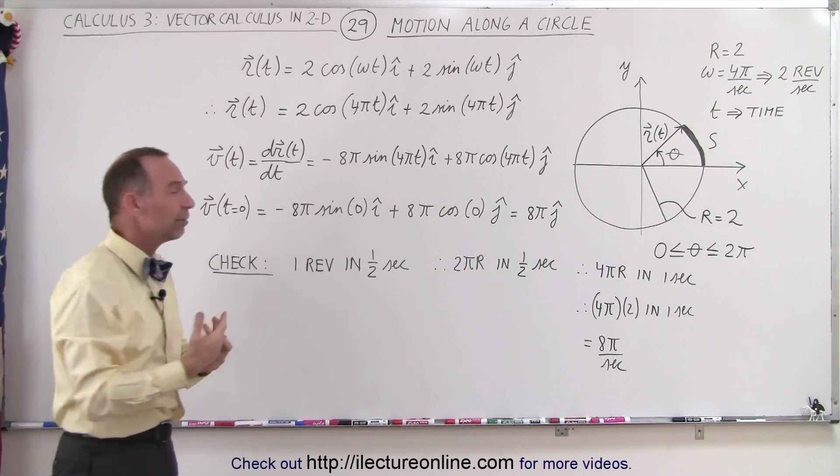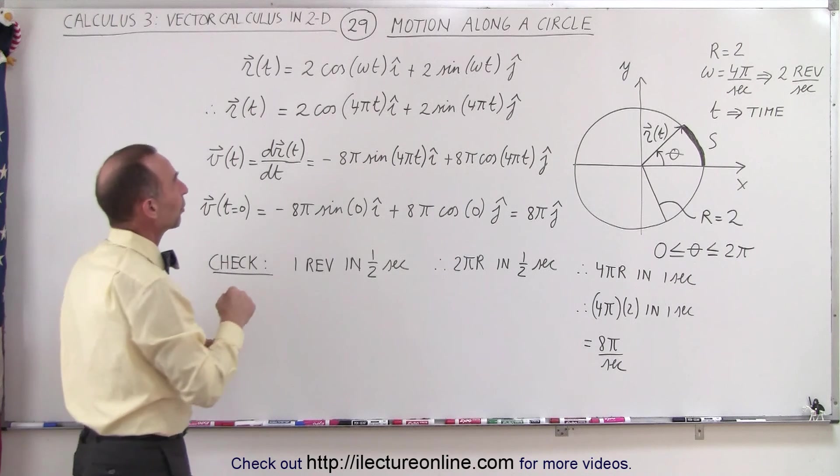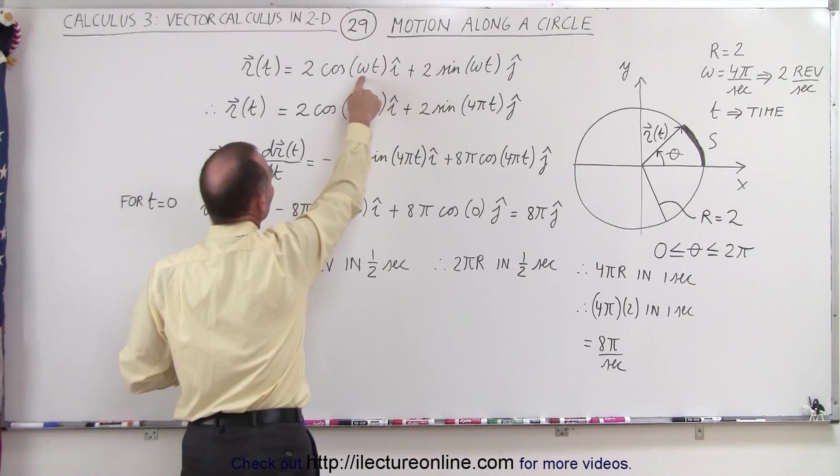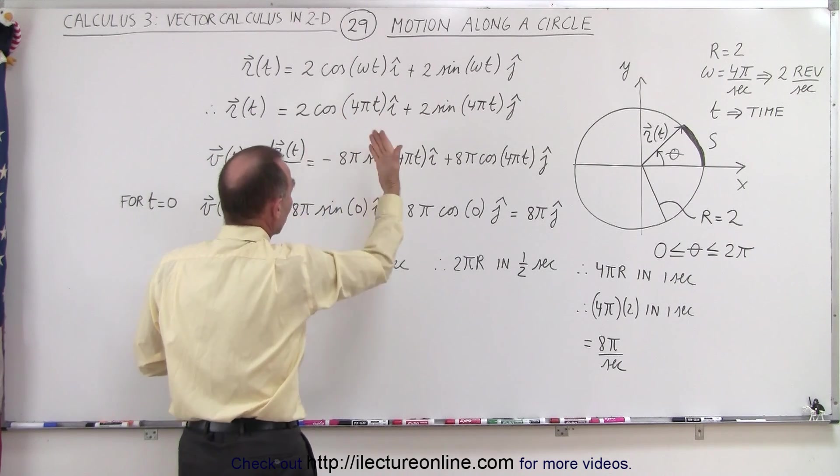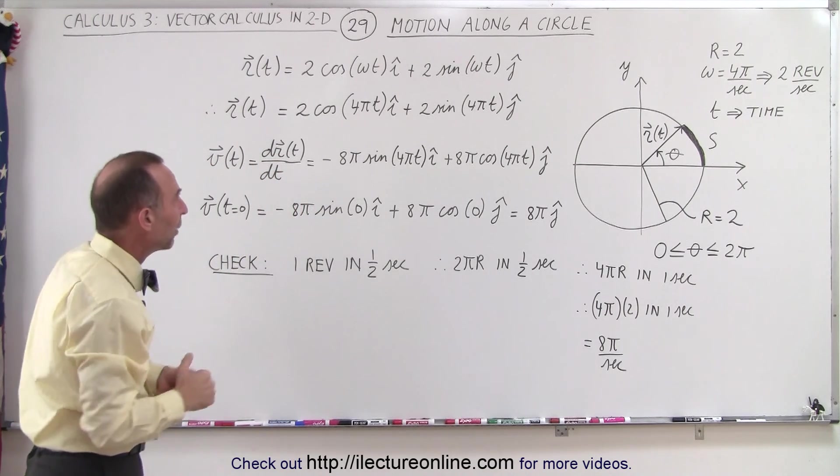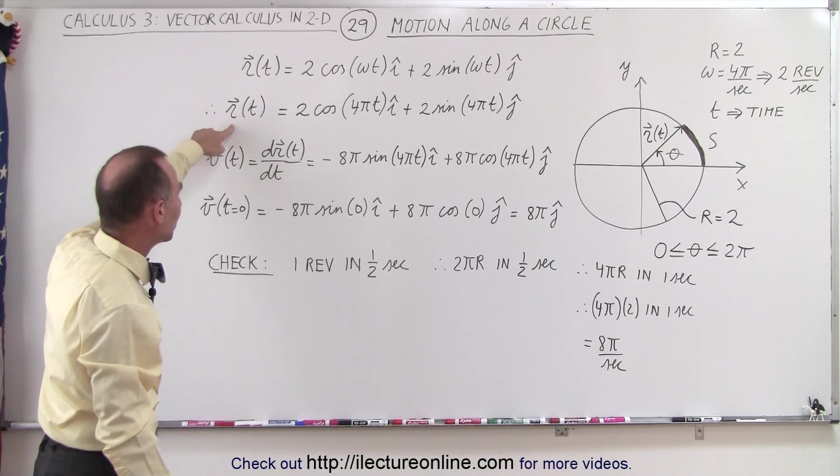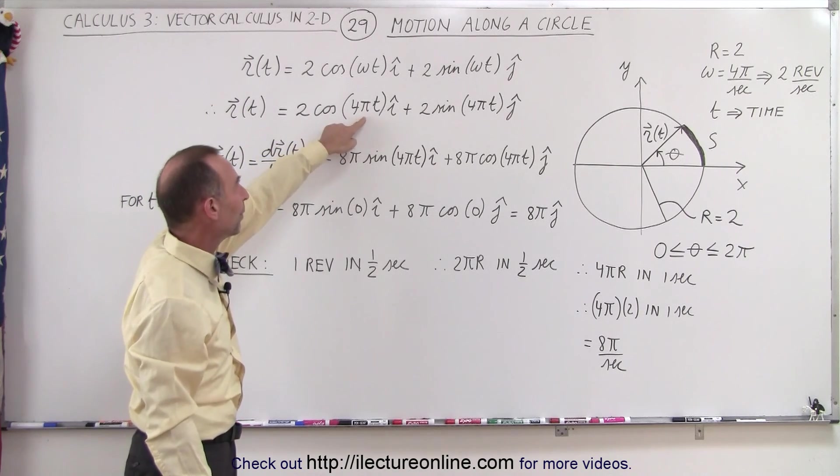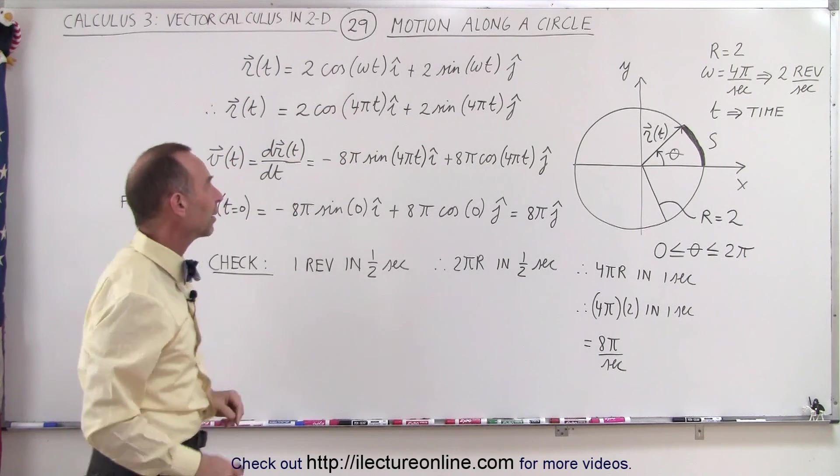So how do we define velocity? Well first what we're going to do is instead of writing omega, we're going to write 4 pi, because that's what omega is equal to. Omega is going to be a constant, 4 pi radians per second, and so now our position vector can be defined in terms of 4 pi times t instead of omega times t.